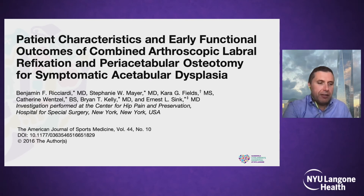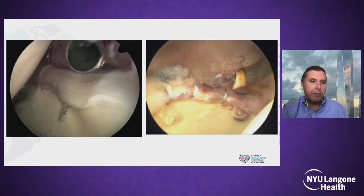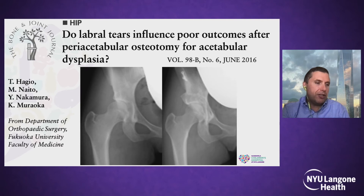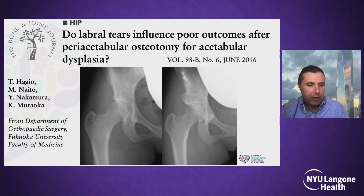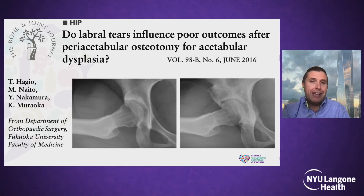So what to do in the setting of dysplasia and a labral tear? As Ernie mentioned, the group at HSS published this and found comparable results in patients undergoing periacetabular osteotomy with and without an arthroscopic labral repair. This isn't without logistical issues — it increases operating time and in most instances requires two surgeons, one to perform the arthroscopic part and one to perform the osteotomy. Most studies evaluating the impact of arthroscopic labral repair, including a paper from Japan, show that patients do not have a worse outcome without labral repair after a periacetabular osteotomy in the setting of dysplasia. If the bony deformity is corrected to more normal anatomy, results have been consistently good.